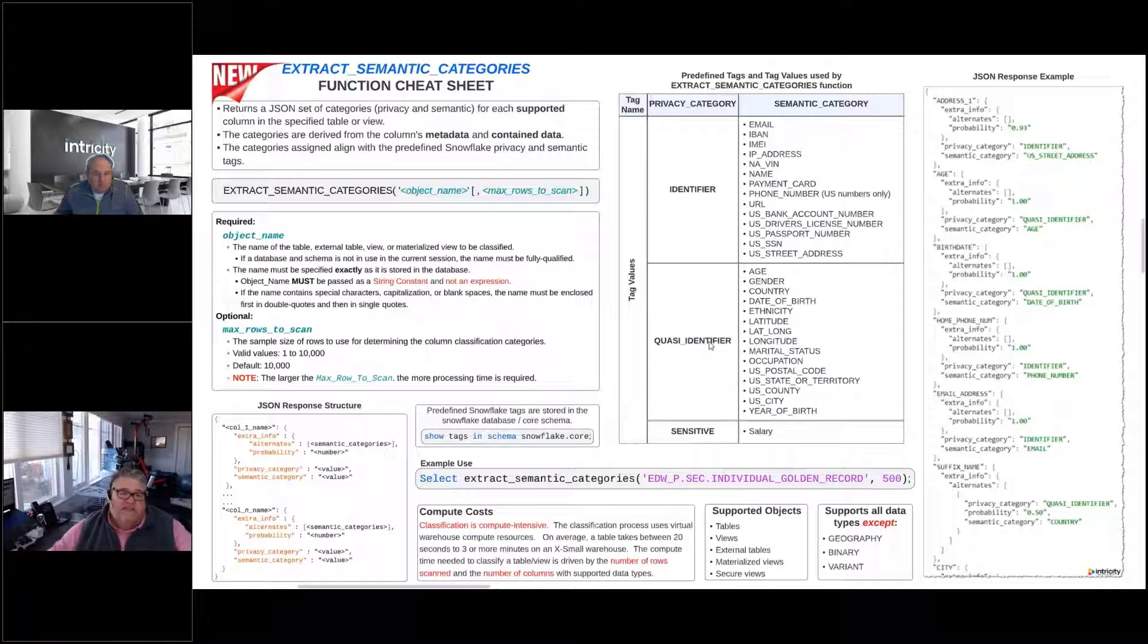When we go to the quasi-identifiers, these are maybe not quite so sensitive. But if we had more of these that we have, the closer we can get to the person. So if we just had a person's age, that's probably not that big of a deal, but if we've got their age and their gender, and as we get more and more of these things, we can come closer. And so what Snowflake is doing is they're really aligning these with statutory requirements.